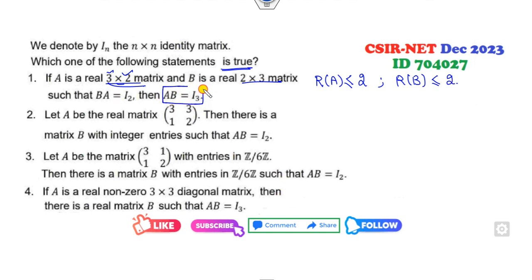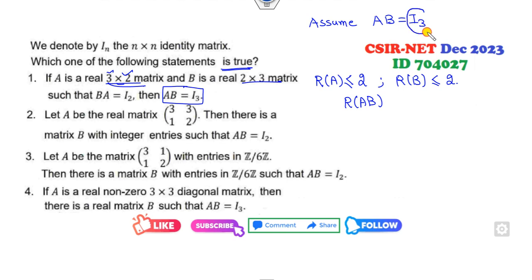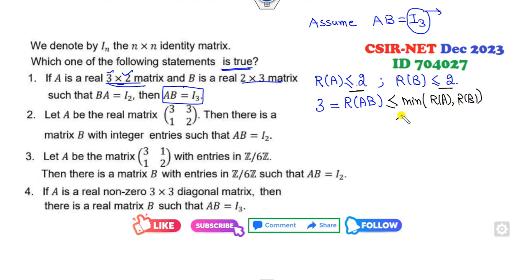Now our target is to check whether AB = I₃. Assume this condition holds. Then rank of AB equals rank of I₃, which is 3. But we also know that rank of AB is less than or equal to minimum of rank of A and rank of B, which is at most 2. So rank of AB must be less than or equal to 2, but we need it to be 3. This does not satisfy, so the first option is cancelled.